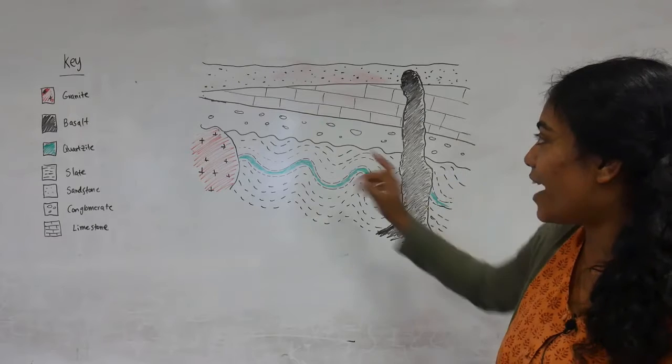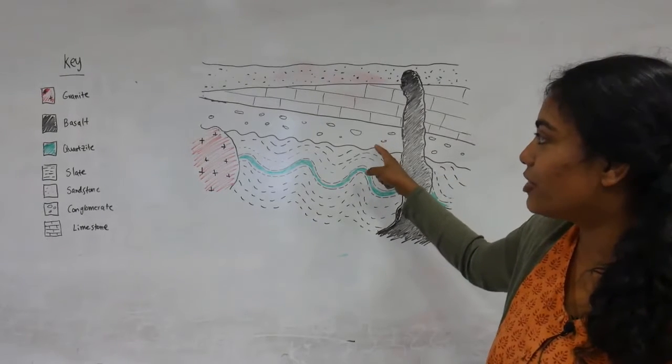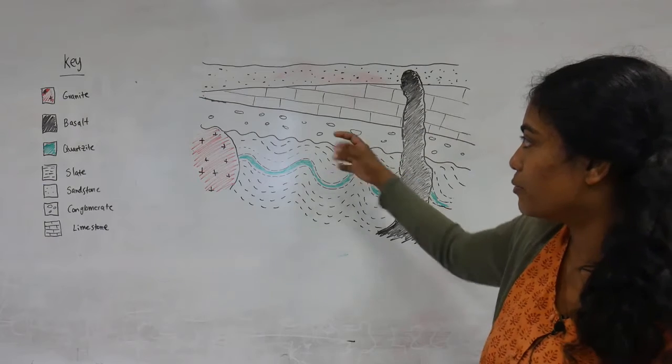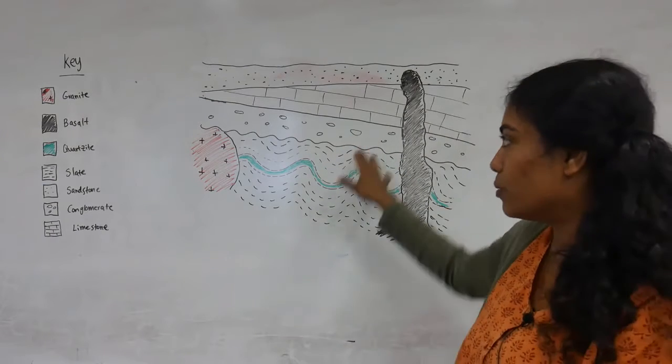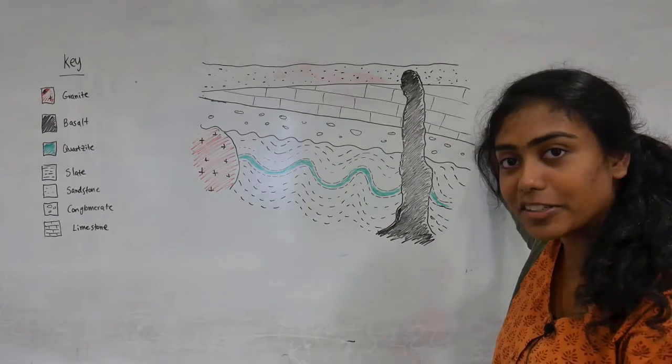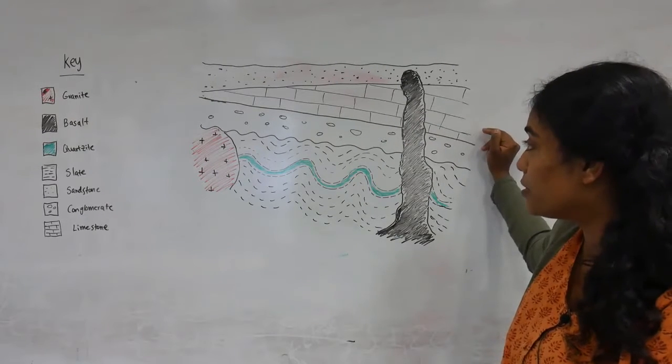After that we would have had the deposition of these round clasps which form the conglomerate and the deposition of calcium carbonate material which would have formed the limestone.